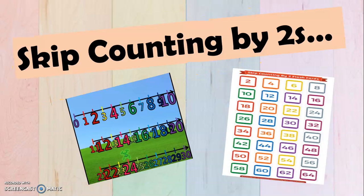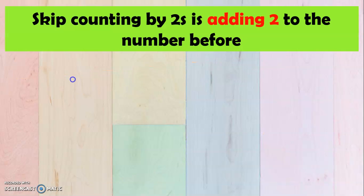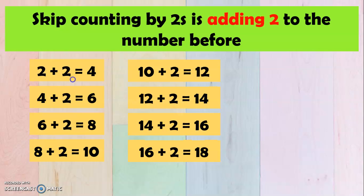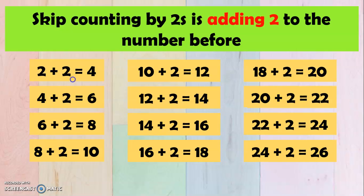Now we're going to start with skip counting by 2s. Skip counting by 2s is adding 2 to the number before. So we have here 2, and then we add 2, so it's 4. Then 4 plus 2 is 6, 6 plus 2 is 8, 8 plus 2 is 10, 10 plus 2 is 12, 12 plus 2 is 14, 14 plus 2 is 16, 16 plus 2 is 18, 18 plus 2 is 20, 20 plus 2 is 22, 22 plus 2 is 24, and 24 plus 2 is 26. The same goes with the other numbers.